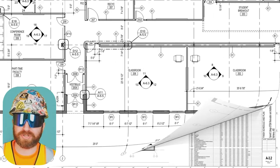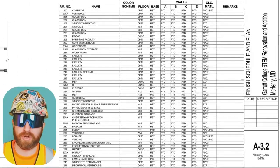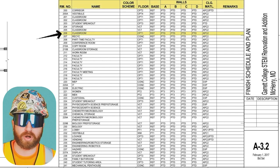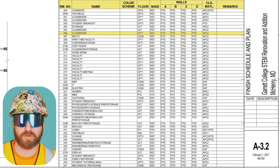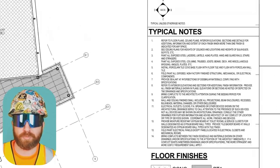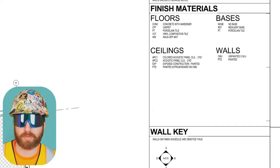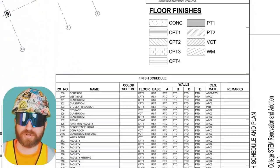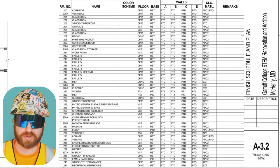Looking at room 206, let's flip to A3.2. This finish schedule is going to show the materials that are going to be installed in this specific room. When I look at room 206 classroom, I can go across this list and see what's going to be installed on the floor, what kind of base you'll have, what goes on the walls, and what your ceiling type is. I see CPT1 — from experience, that's carpet. And RST — looking up above, we can see that stands for rubber base. This schedule also tells us what's going on the walls, the ceiling, and much more. We just keep navigating through this page to make all the acronyms and details make sense.